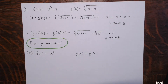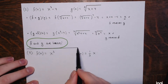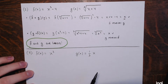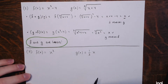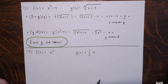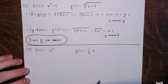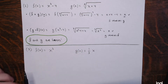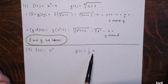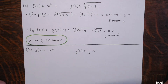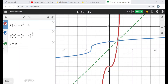The next example: same thing, I'm asked to verify whether or not these functions are inverses. Here f(x)=x³ and g(x)=(1/3)x. One's a cubic function, the other's linear. Before even doing the verification, I can see from the graphs that they're not inverses.